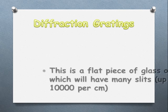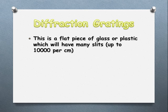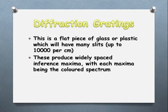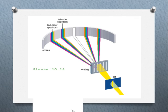Diffraction gratings are something that they use, and it's basically a small piece of glass or plastic that has stacks of slits. What it does is produce rainbow patterns as light passes through it. You've got your light, a slit here to create more like a point source, passing through the diffraction grating, and we get this constructive and destructive interference pattern. At the centre, there's complete constructive interference.